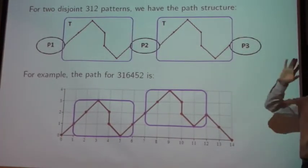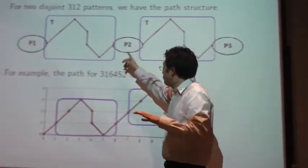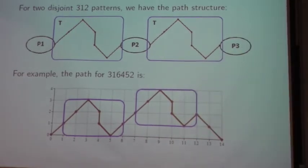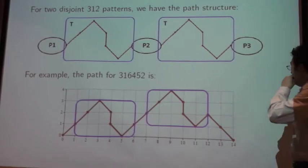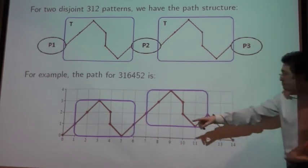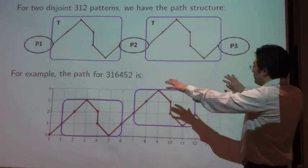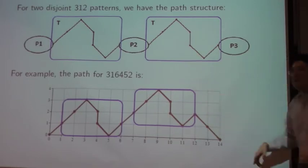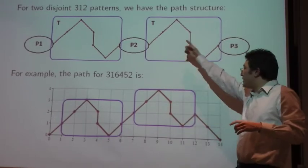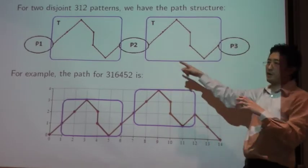Likewise, it's possible you may have, in a sense, two disjoint 312 patterns. And so in terms of the path, you may end up with two copies of this 312 subpath connected with some other partial paths. And so one example here is the permutation 316452. The path for this permutation is exactly this. And this is one specific case of, for example, this thing here. So basically, instead of counting, you can come over here and, with generating functions, count all the ways that this structure can occur in your paths.